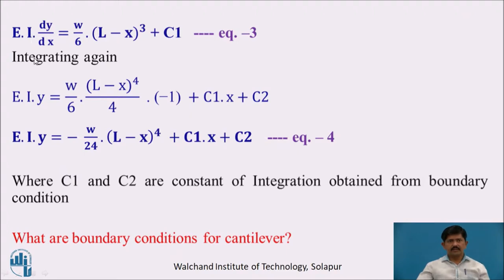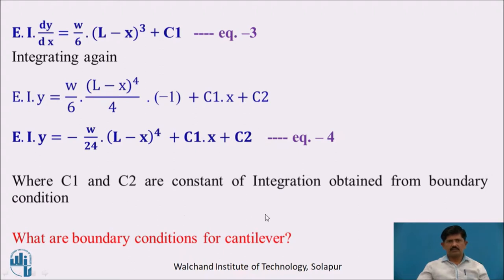Integrating equation 3 again, we get EI·y = (W/6)·(L − x)⁴/(4·(−1)) + C₁·x + C₂, which gives EI·y = −(W/24)(L − x)⁴ + C₁·x + C₂ (equation 4). C₂ is the second constant of integration. C₁ and C₂ are obtained from boundary conditions. Please pause the video and try to write the boundary conditions for a cantilever beam before continuing.